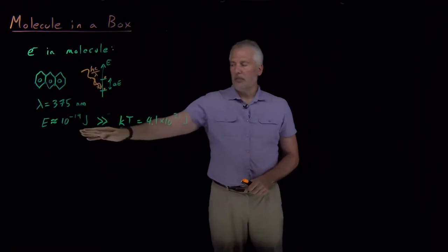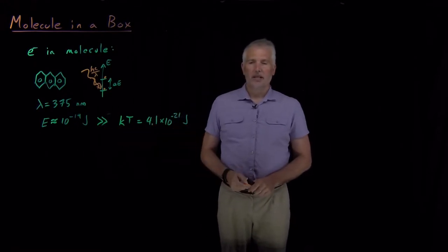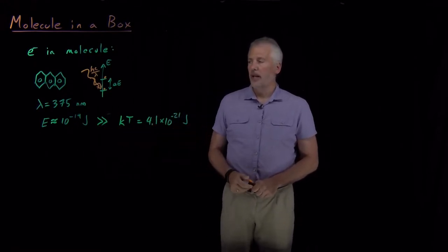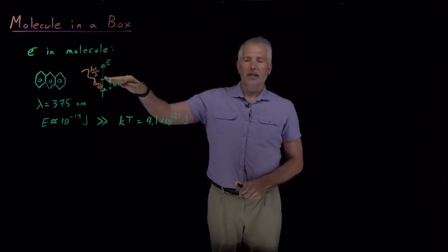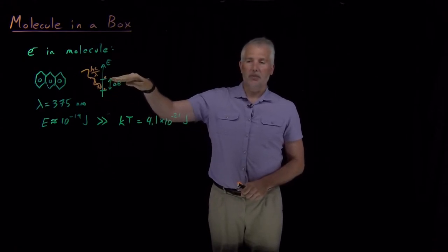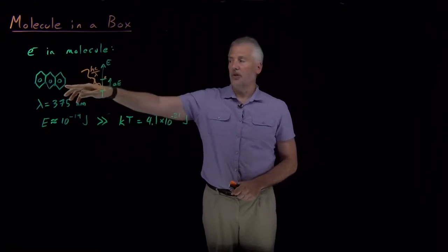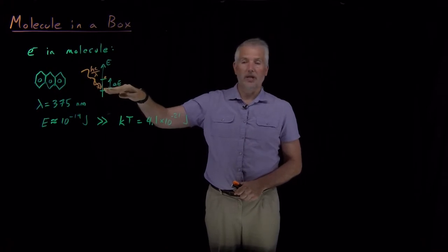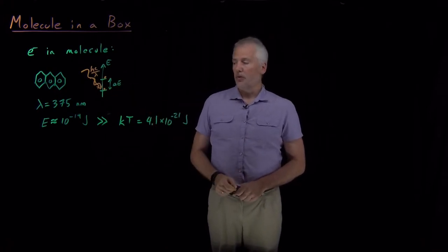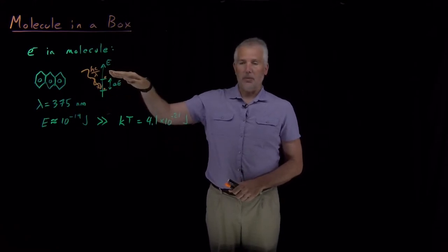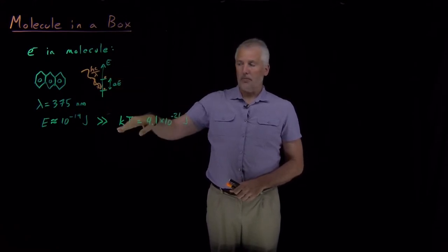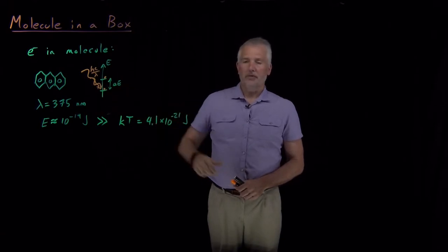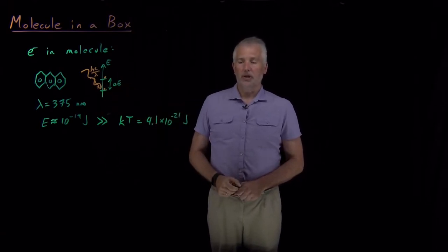We immediately know by comparing those energy differences to kT several things. For example, we know that because it's so many kT, 100 or so kT to get up to this state, the upper state is not going to be very populated. Most of the electrons in this molecule, an overwhelming majority of the electrons in this molecule, will be in the lower energy levels. We also know, for example, if we were interested in the partition function, that because the only states that are populated are the states low compared to kT, that the partition function is going to be relatively small for this molecule.